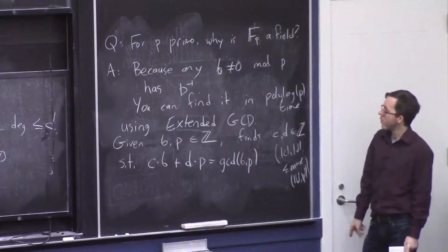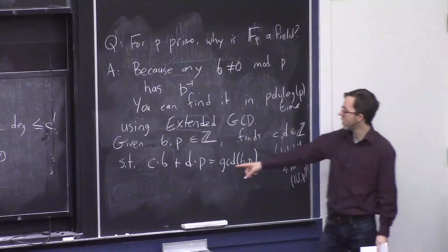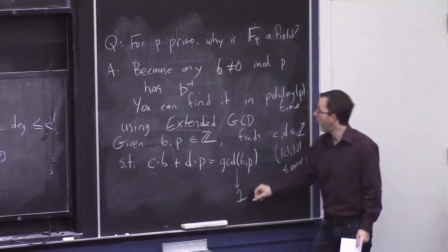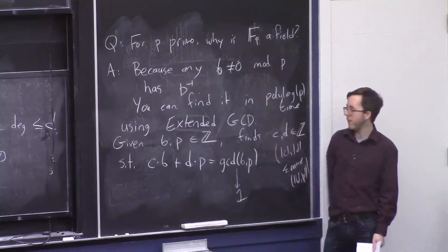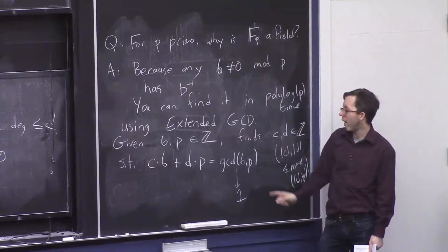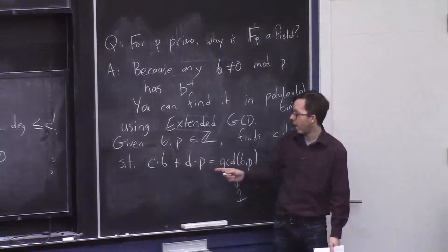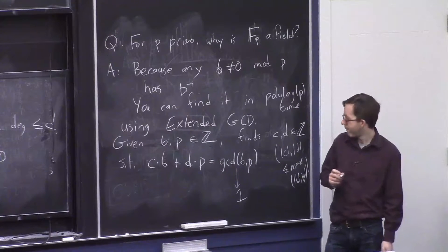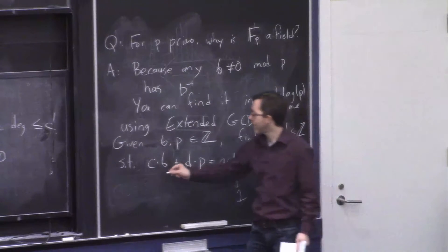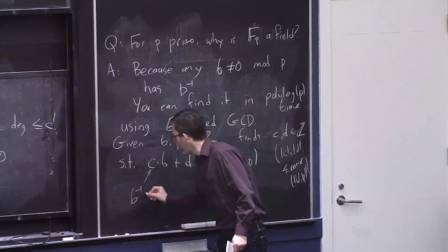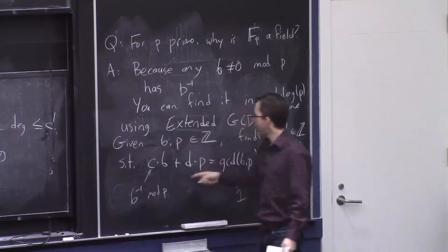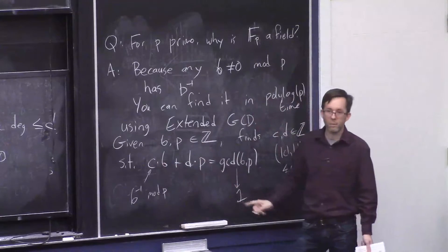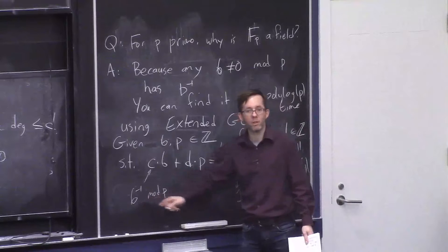And this is very nice when p is a prime. So if p is prime, then this GCD between b and p is 1. Because we're assuming b is not 0. It's not a multiple of p. And so now once you have this, what is b inverse, or reciprocal of b? Yeah, it's c. So this is b reciprocal mod p. Because this is a multiple of p, so you could ignore it mod p. And now it's saying that this number times b is 1 mod p. OK, so c is the reciprocal you're looking for.